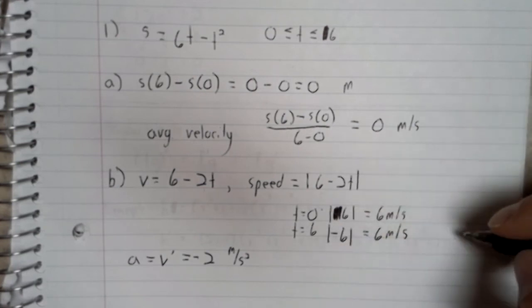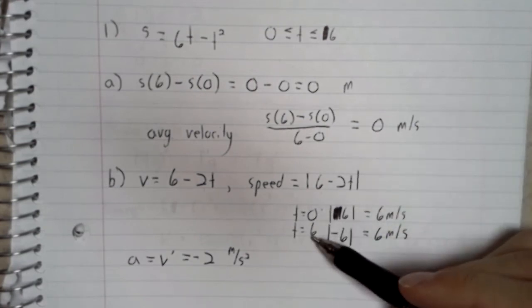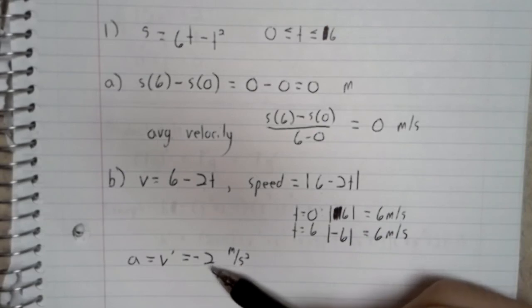The acceleration is constant. So in particular, at 0 and 6, the acceleration is negative 2.